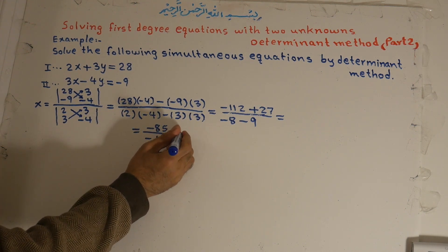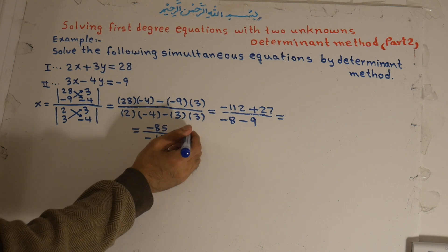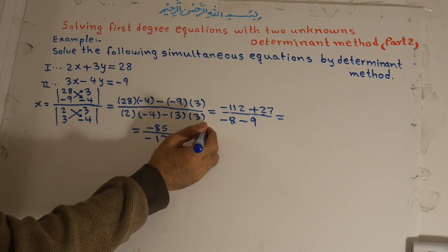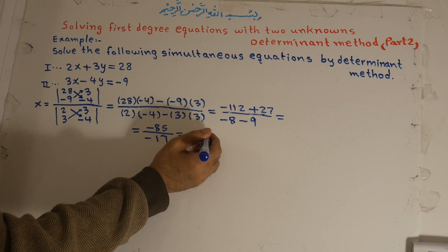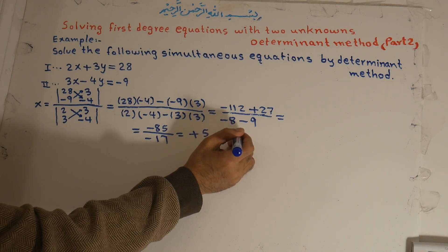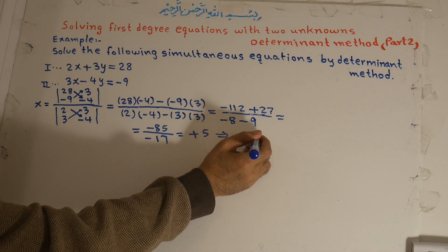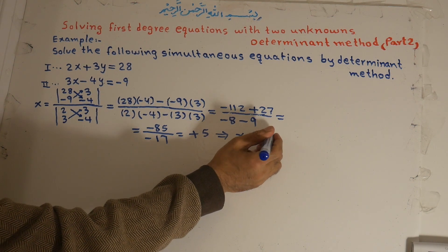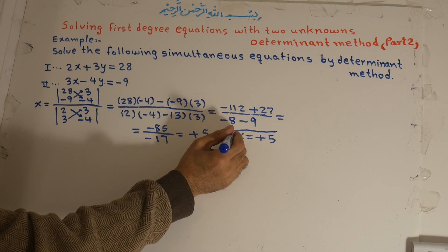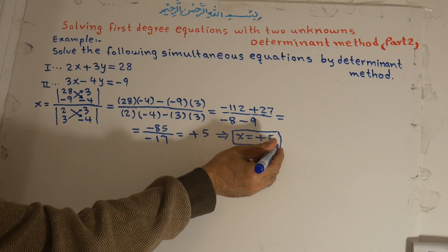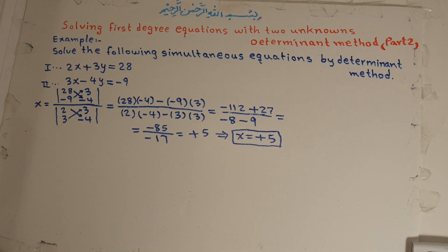Negative times negative is positive: 85 divided by 17 becomes 5. So x is equal to positive 5. For a positive value, whether you write the sign or not makes no difference. x equals 5.